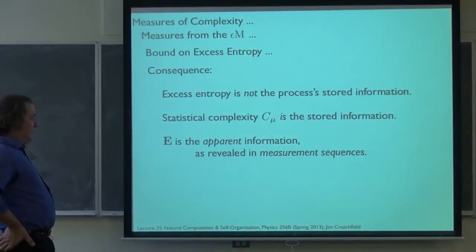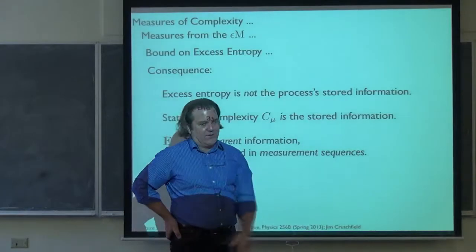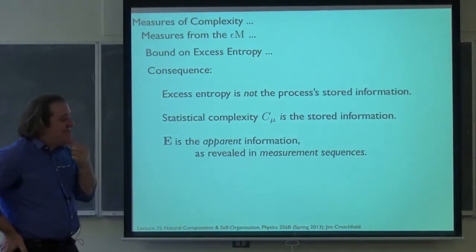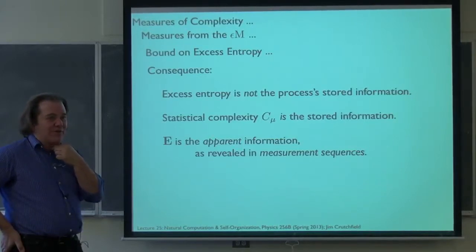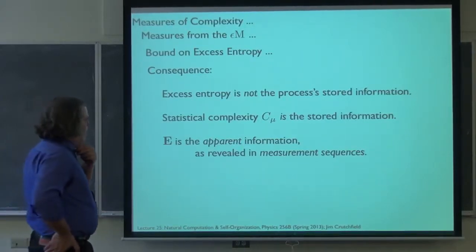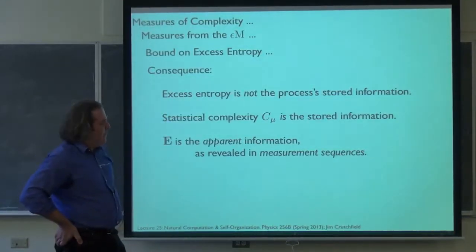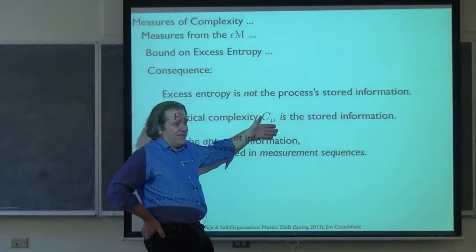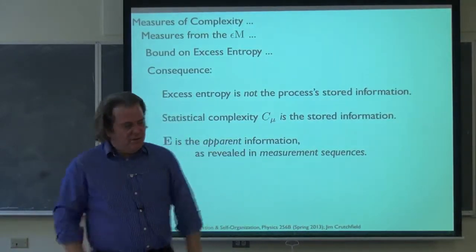After all this discussion, one consequence to draw: the excess entropy is not the process's stored information. This has been a confusion — and still is — in many literatures including information theory, machine learning, and neuroscience. That one class of processes, almost IID, shows that this is the case. It really is the statistical complexity that's the stored information. At this point it's a little more intuitive, because we know the causal states are built out of the causal equivalence relations — grouping things that are equally predictive.